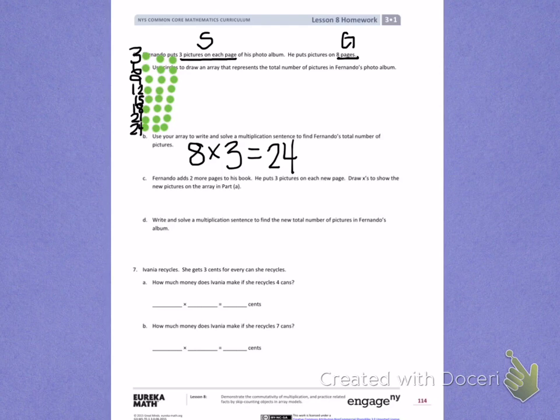Fernando adds two more pages to his book. He puts three pictures on each new page. Draw X's to show the new picture on the array in part A.